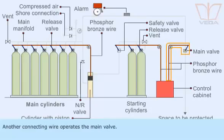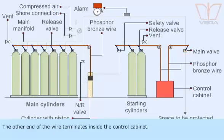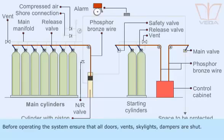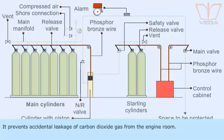Another connecting wire operates the main valve, with the other end of the wire terminating inside the control cabinet. Before operating the system, ensure that all doors, vents, skylights, and dampers are shut. This prevents accidental leakage of carbon dioxide gas from the engine room.